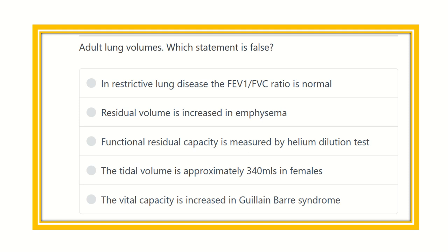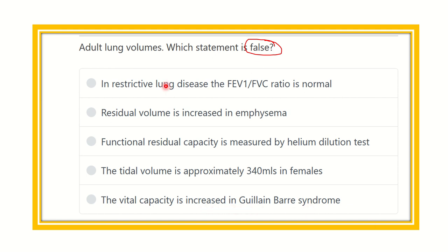Hello everyone, welcome to another question and answer session — physiology portion of the MRCS. This question is about adult lung volumes. We have to find the false statement. The options are: A) in restrictive lung disease the FEV1/FVC ratio is normal; B) residual volume is increased in emphysema; C) functional residual capacity is measured by helium dilution test; D) tidal volume is approximately 340 mL in females; E) vital capacity is increased in Guillain-Barré syndrome.